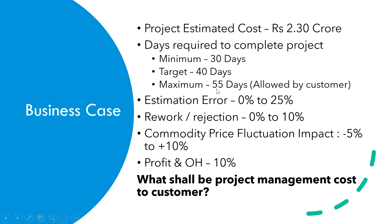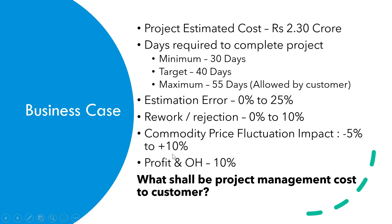Based on past experience, they are predicting the estimation error could be up to 25 percent — based on past projects they have executed. Then they want to consider a rejection of around 10 percent which the company has to spend, and for rework or anything they are keeping another 10 percent as a margin. They are also expecting commodity price can go down or increase, and the impact on the estimated value could be around minus 5 to 10 percent — so it can be on either side.